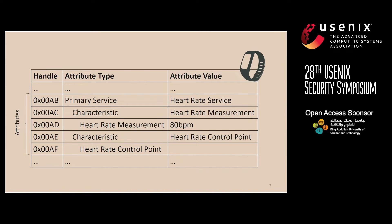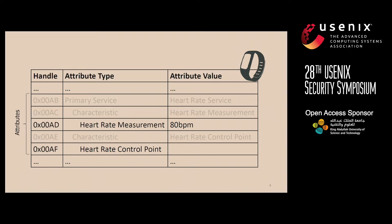With Bluetooth low-energy, unlike with classic Bluetooth, data is handled primarily as small discrete values, and these are referred to as attributes. There are different types of attributes, and the type we are most interested in are called characteristic value attributes, which hold the actual data values of interest. For example, a characteristic value could hold a user's heart rate measurement, cycling speed, or even the speed of a BLE-enabled hoverboard.